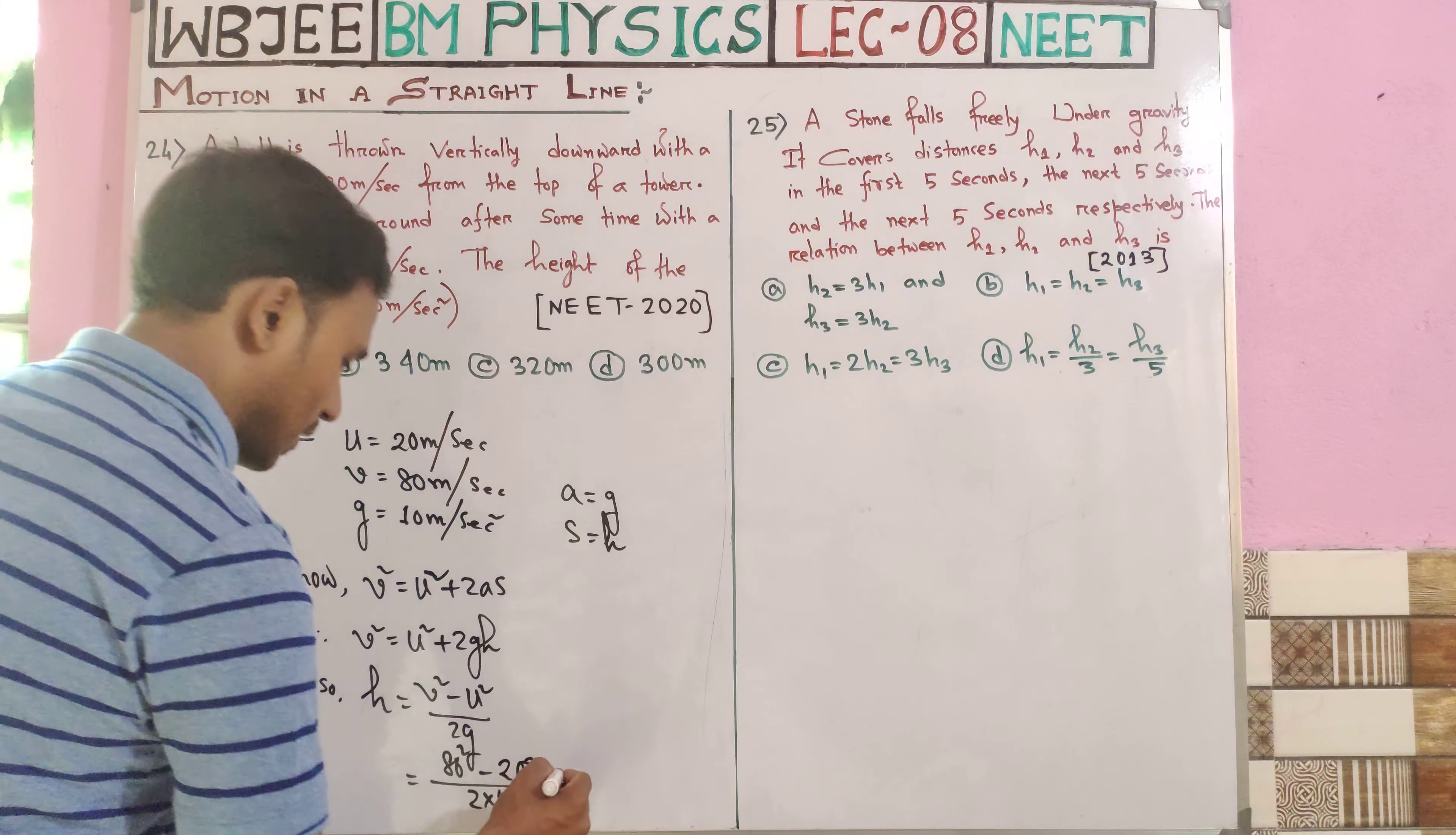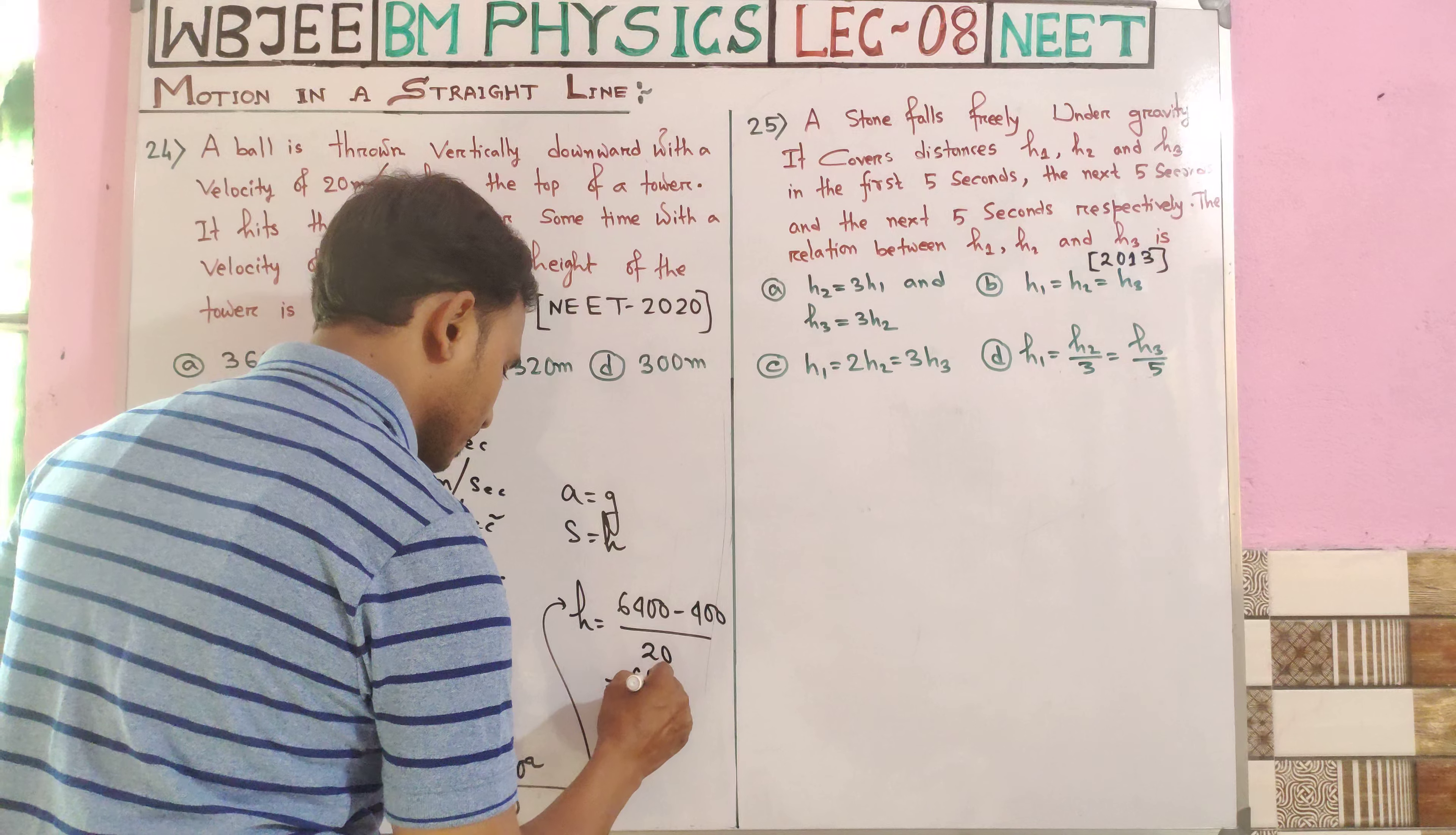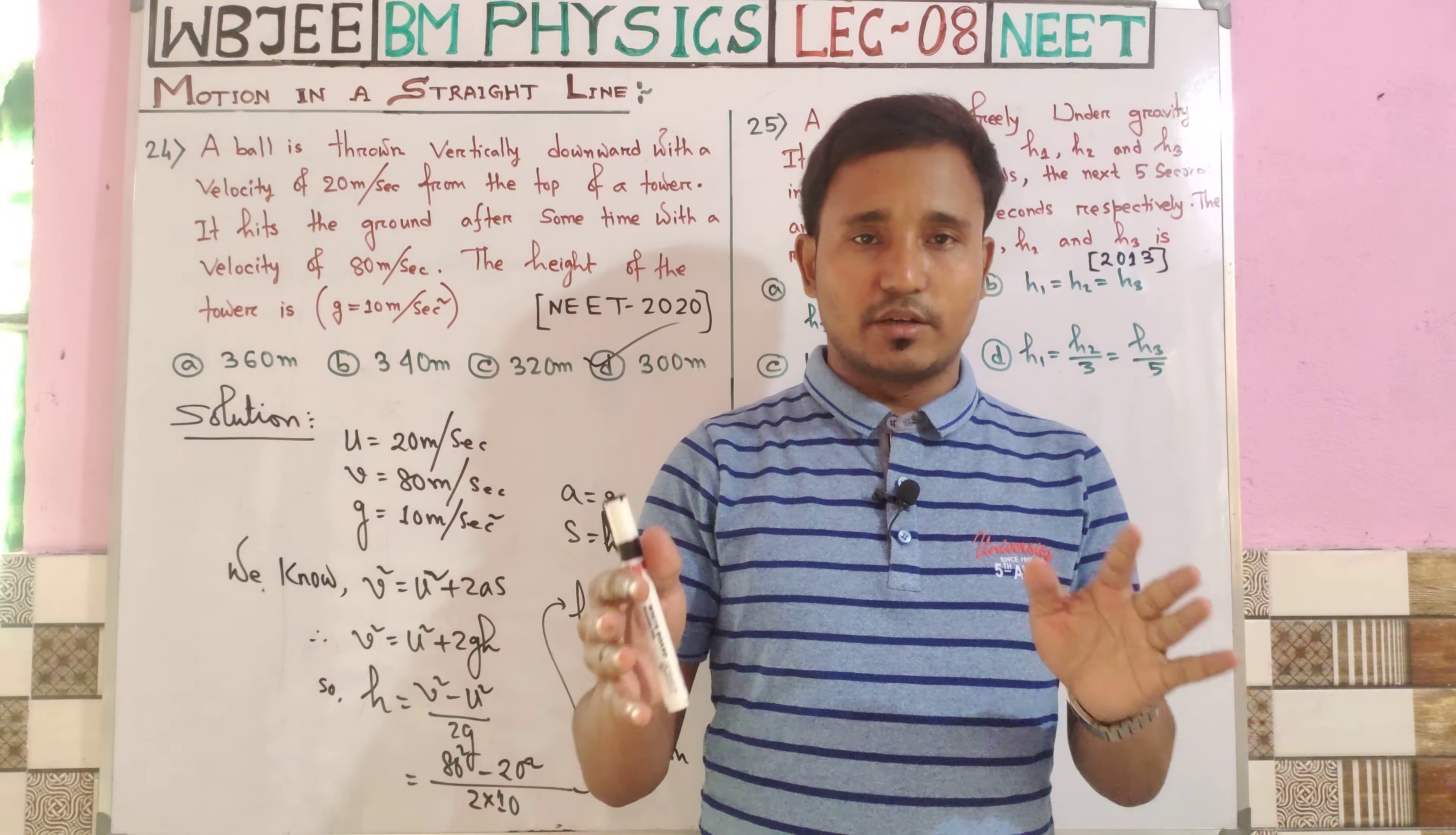Finally, the height of the tower is 6400 minus 400 divided by 20, which equals 300 meters. So option D is the correct answer.